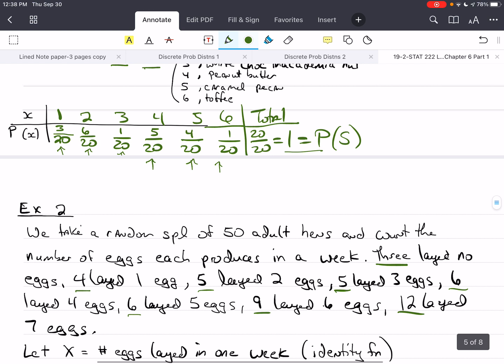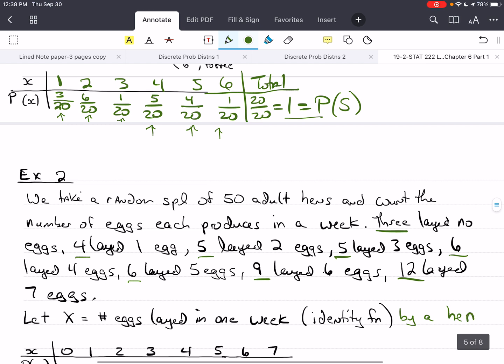We want to let our random variable X be the number of eggs laid in one week by a hen, or one female chicken. This is what we call an identity function. A random variable is actually a function. For every value in the, or every outcome in the sample space, it's going to assign a value, a real number, to that outcome. In this case, if we let X be the number of eggs that a hen lays in one week, then we're going to get numbers like 0, 1, 2, 3, 4, 5, 6, 7 eggs. Those are the values of X.